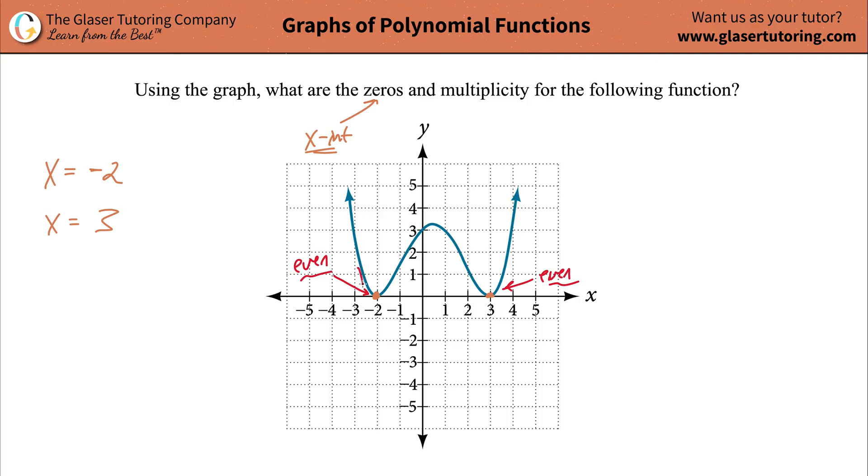So that's basically what we have here. We're going to have an even multiplicity. Since it's not that flat, the multiplicity value for each of those zeros would be two, and that's it.